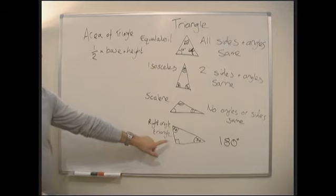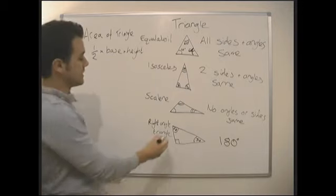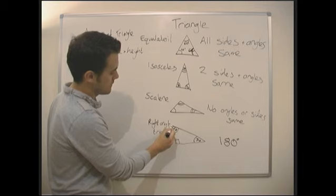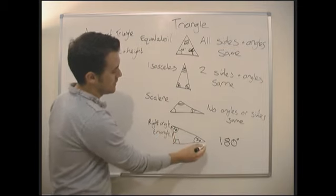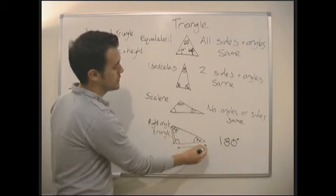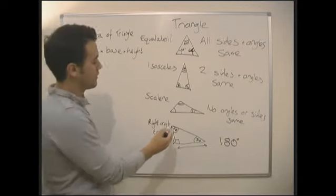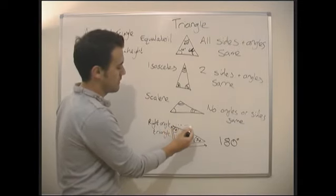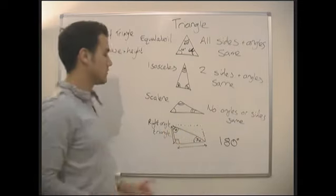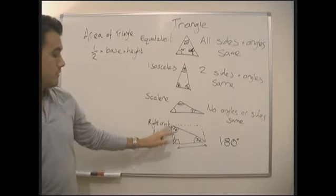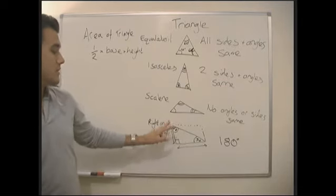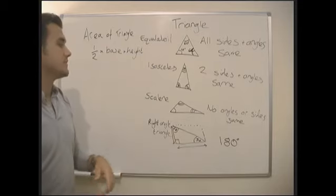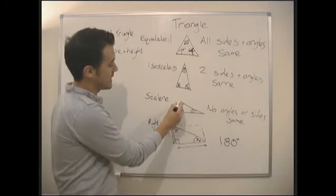With a right-angled triangle, nice and easy. This is our height here. And this is our base. And we can see why it's half base times height. Because, essentially, this is half a rectangle. So, the area of a rectangle would just be base times height. This is half of it. So, it's just half of the base times the height.